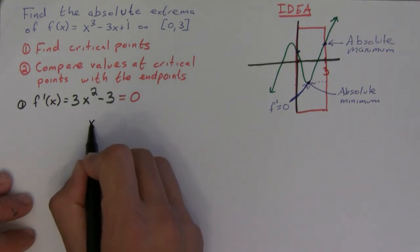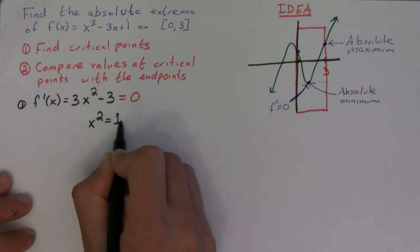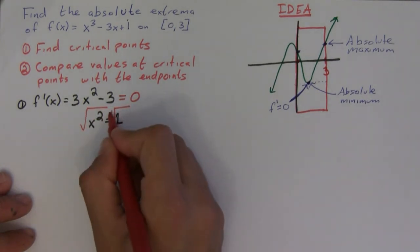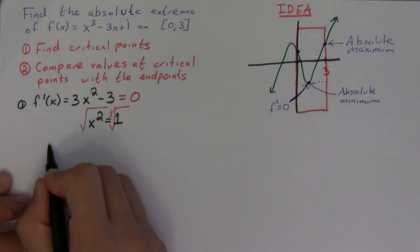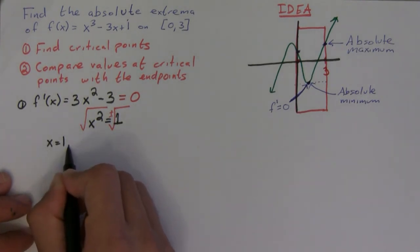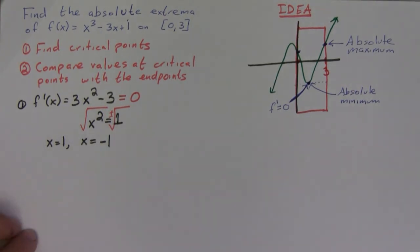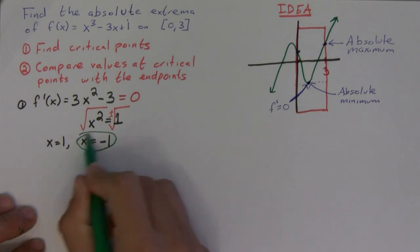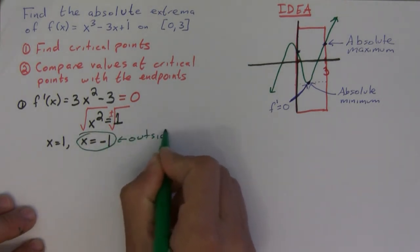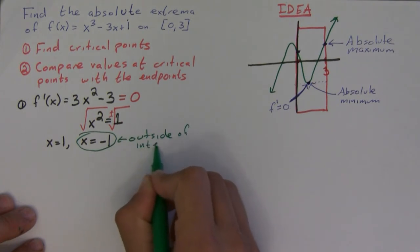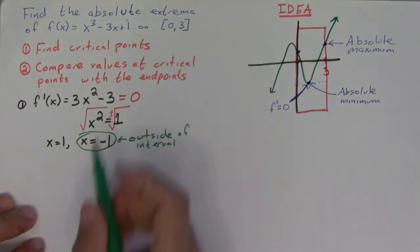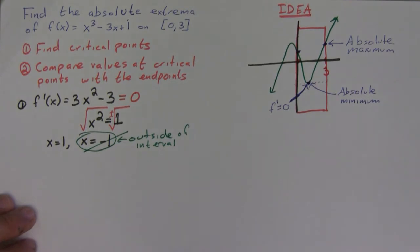And if we do that, we're going to get that x² is equal to one. And when we take the square root of both sides, we're going to have a positive and a negative. So these are the two critical points: x equals one and x equals negative one. Okay, but notice that this guy, negative one, is outside of my interval, and because here it starts from zero and only goes from zero to three, so this one I don't really have to check this time around.